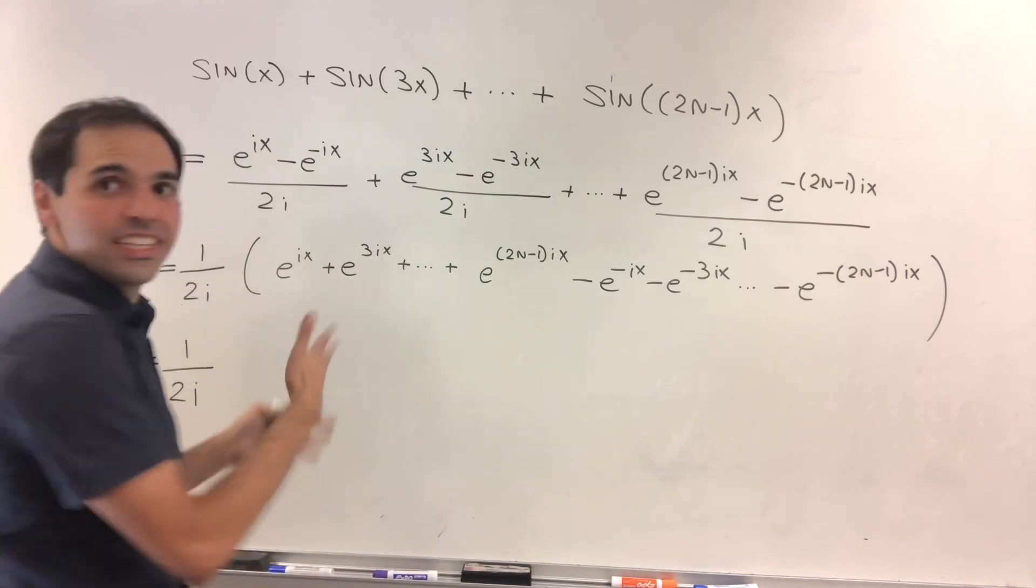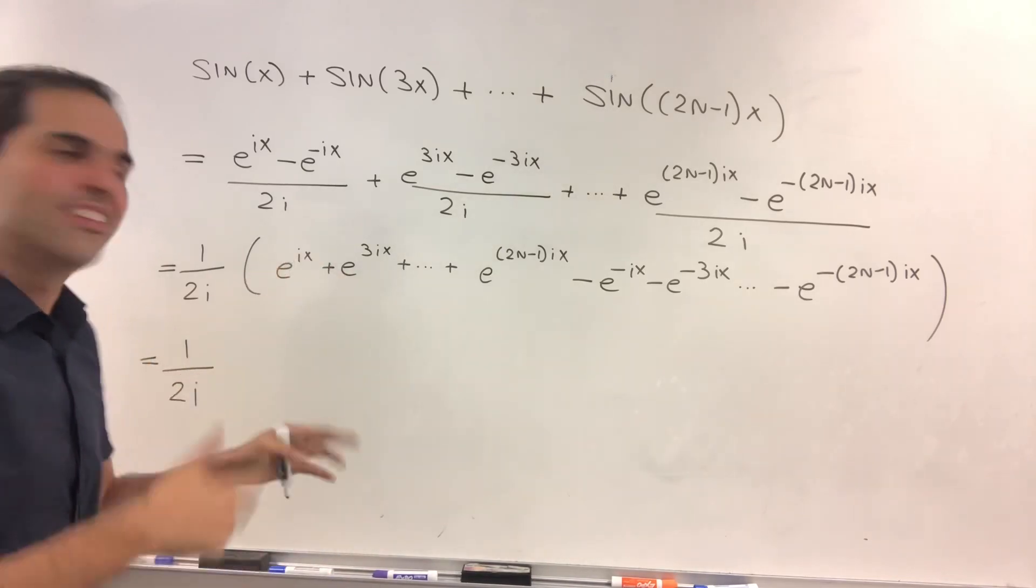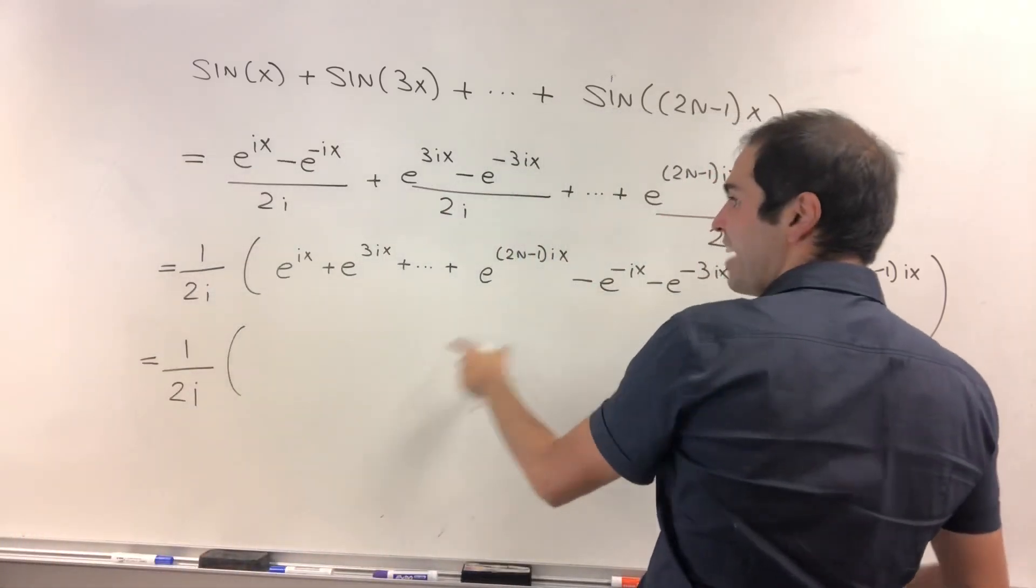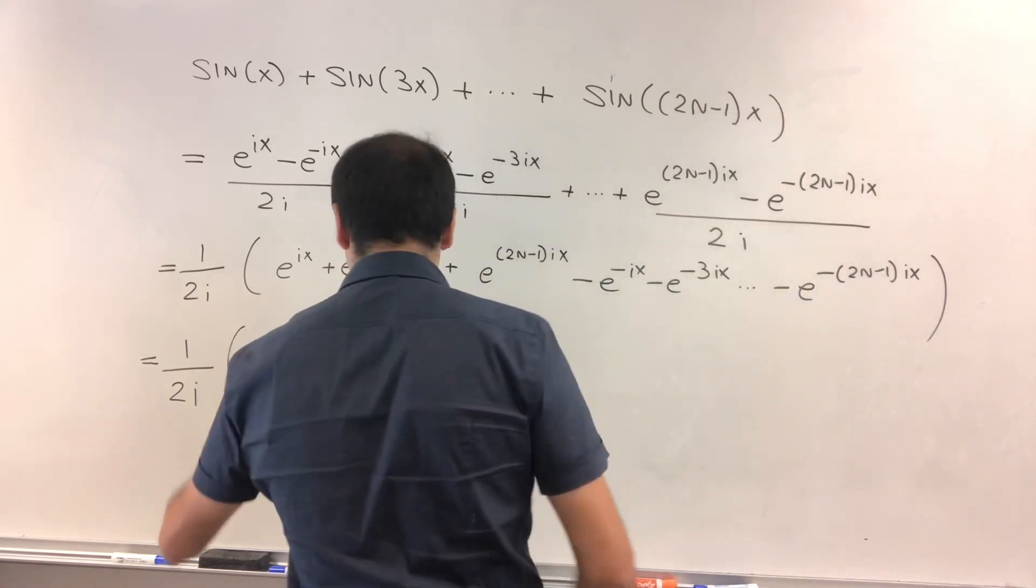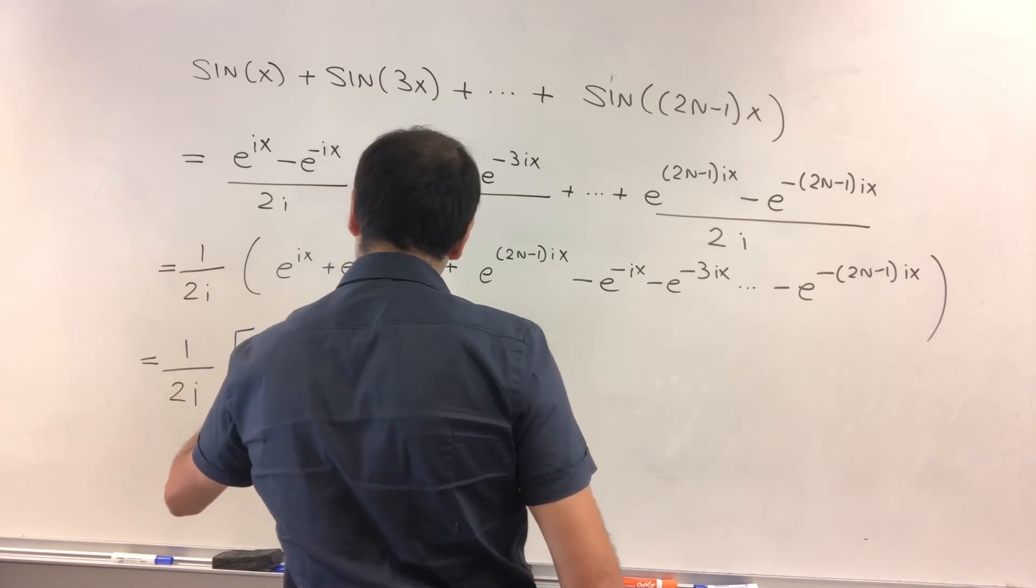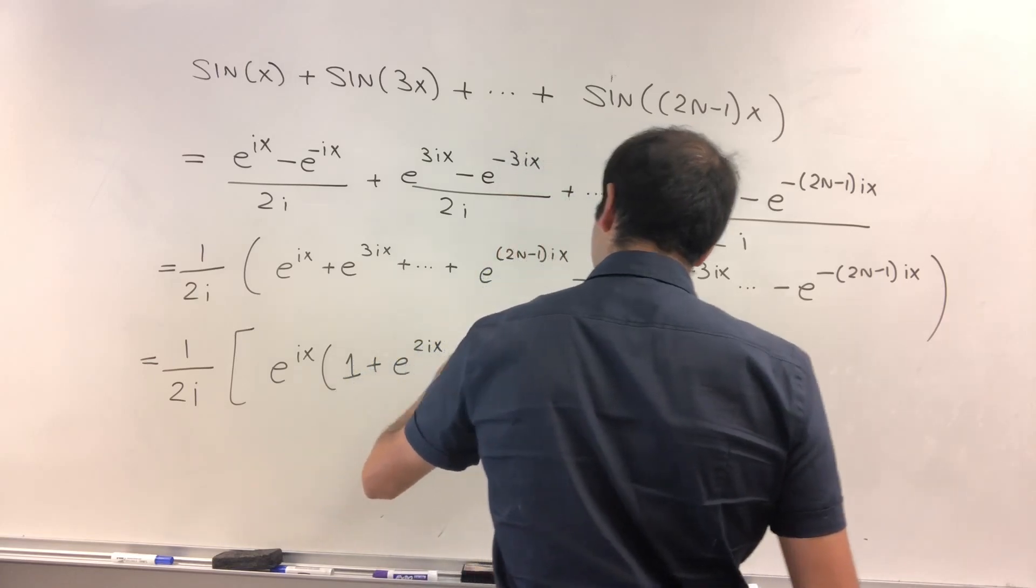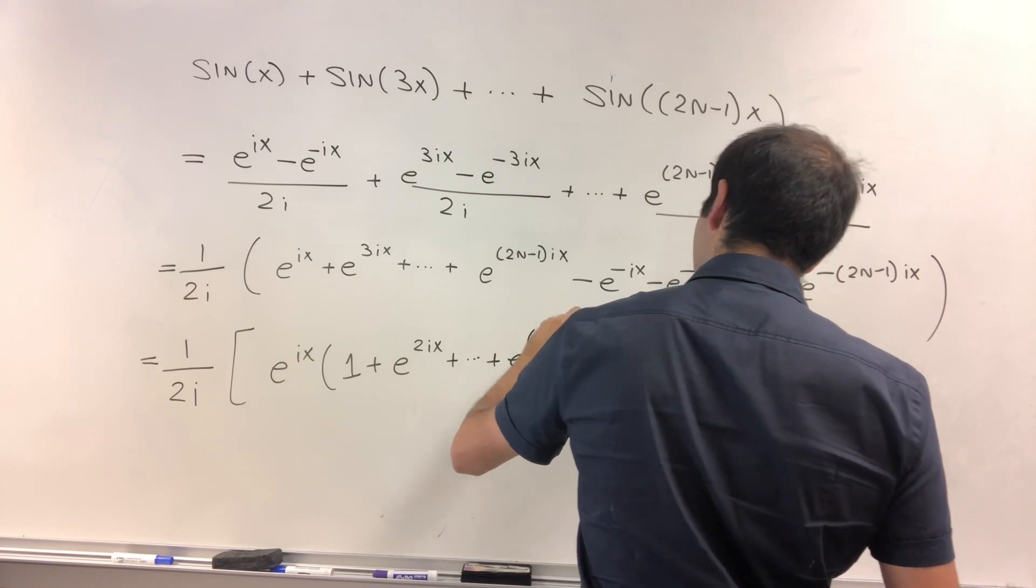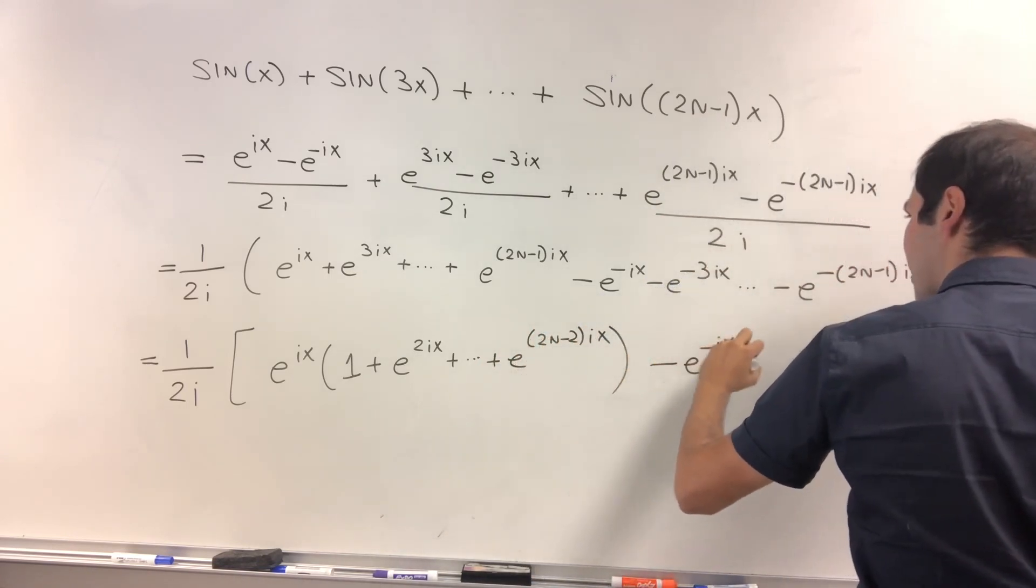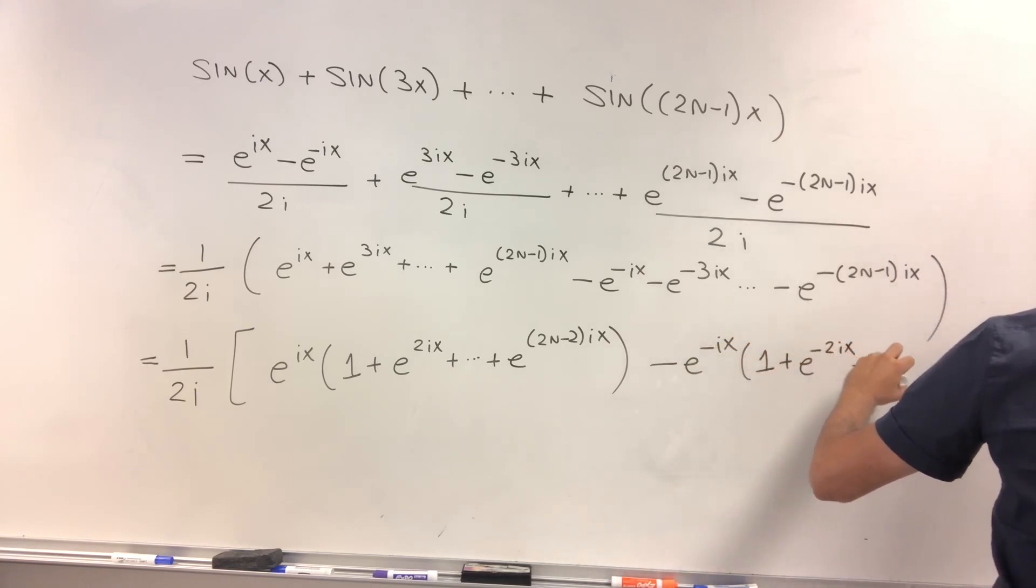But the nice thing here is just technically a purely algebra exercise. I mean, you shouldn't be in algebra if you know how to solve this, but it's still nice. It doesn't use any calculus or whatsoever. Okay. Now, from this, let's factor out e to the ix and see what happens. So this is e to the ix times 1 plus e to the 2ix plus dot, dot, dot, plus e to the 2n minus 2ix, and then minus e to the minus ix, 1 plus e to the minus 2ix plus dot, dot, dot, plus, this is slightly more complicated.